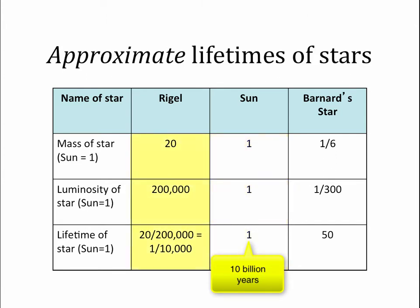Now let's look at Rigel, the knee of Orion the Hunter. Rigel is a massive star — it has a mass 20 times that of the sun, so it has 20 times more fuel. However, its luminosity is 200,000 times that of the sun. Although Rigel has 20 times more fuel, it's using that fuel 200,000 times faster. If we calculate its lifetime — 20 divided by 200,000 — we find that Rigel's lifetime will be 1/10,000th that of the sun, which is only about 1 million years. That's not very long.